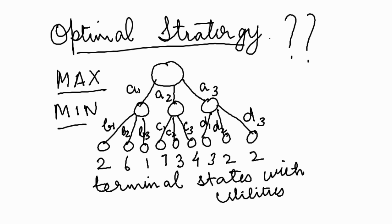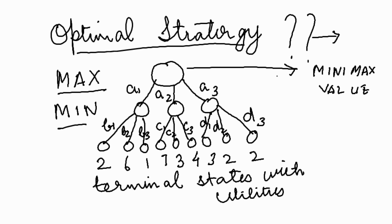To find an optimal strategy we need something known as the Minimax value for a node. The Minimax value of a node is actually the best utility value that the node can achieve. The Minimax value of a terminal state is equal to its utility value.